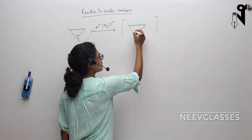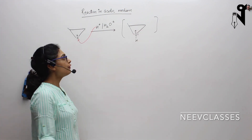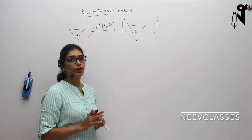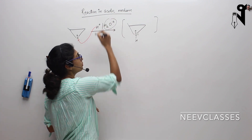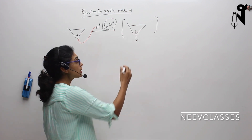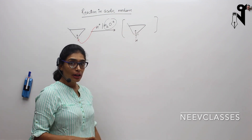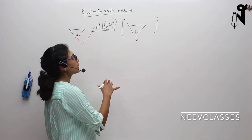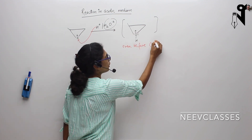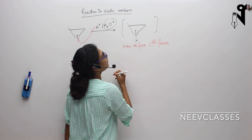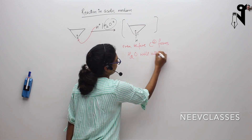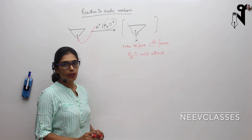Once this forms, the oxygen will become unstable and will try to break its bond. If it had broken its bond, it would have formed a carbocation — but even before a carbocation is formed, this H2O will attack on the more crowded carbon. Because it cannot do a front attack since oxygen is still there, it will do a back attack. Even before carbocation forms, H2O will attack.